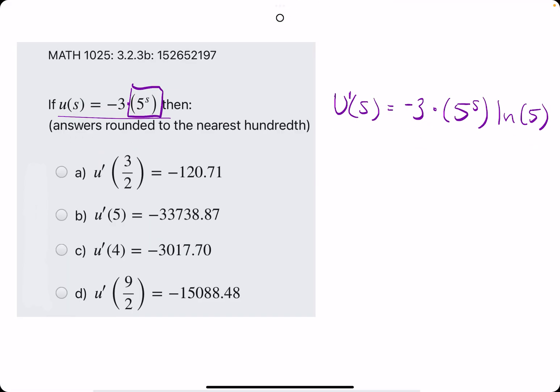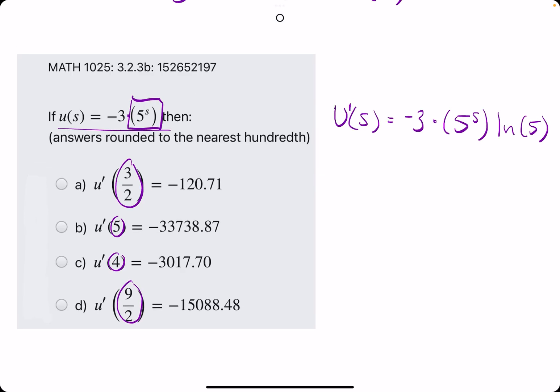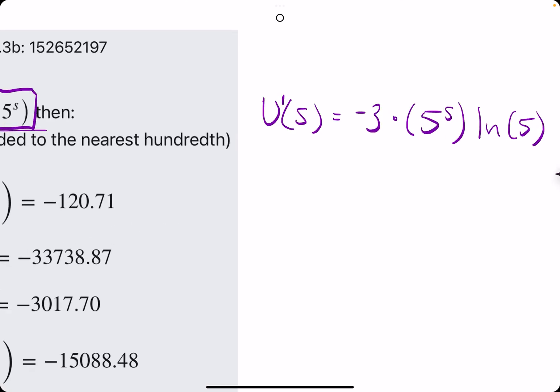So this is our derivative, and now they ask us to plug in 3 over 2, 5, 4, and 9 over 2. And hopefully just one of these values will be correct. So it's kind of tedious,